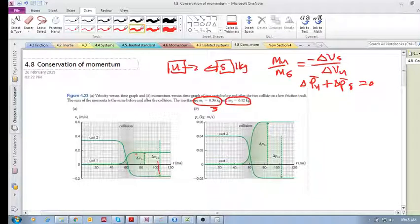Because cart 1 has 3 times the inertia of cart 2, its change in velocity will only be a third of the change in velocity of cart 2. Cart 2's change in velocity will be 3 times higher than cart 1.